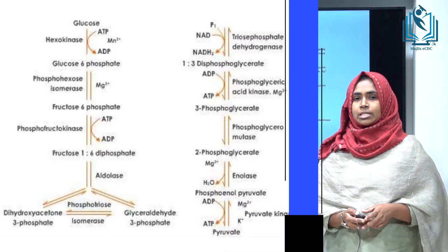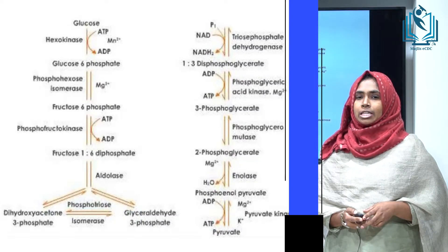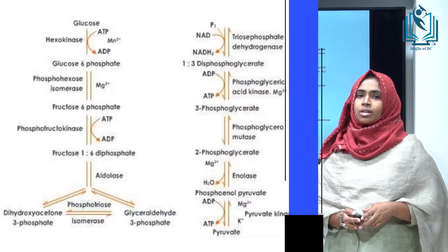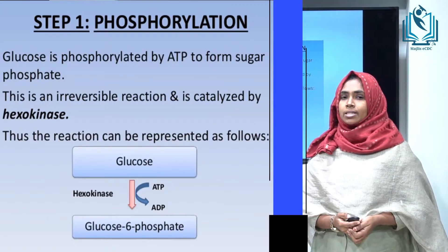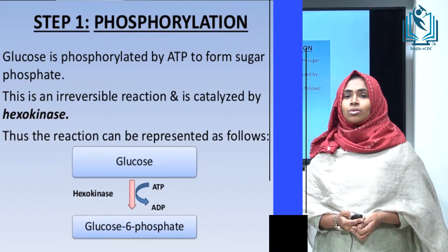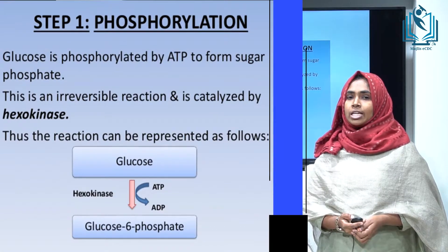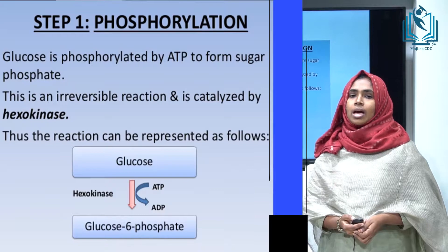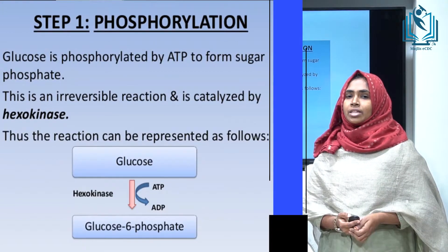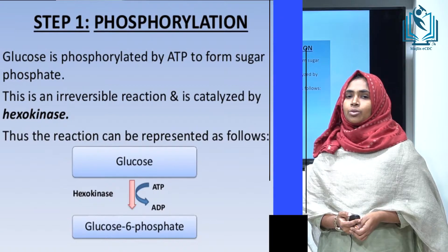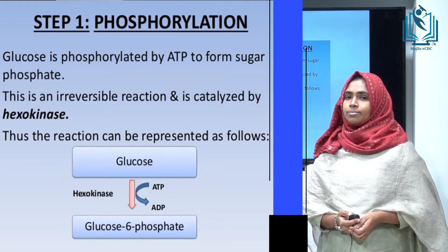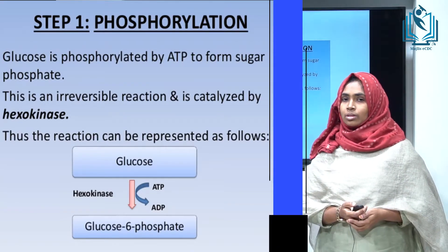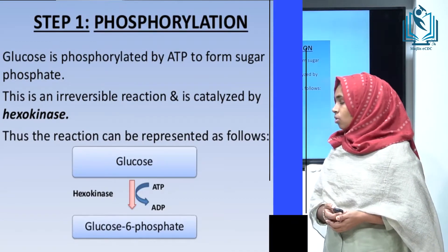Step one is phosphorylation. Glucose is phosphorylated into glucose-6-phosphate by the enzyme hexokinase or glucokinase. Hexokinase has high affinity for the substrate glucose, while glucokinase has low affinity. This step falls under the energy investment phase, so energy is required — one molecule of ATP is broken down to ADP.